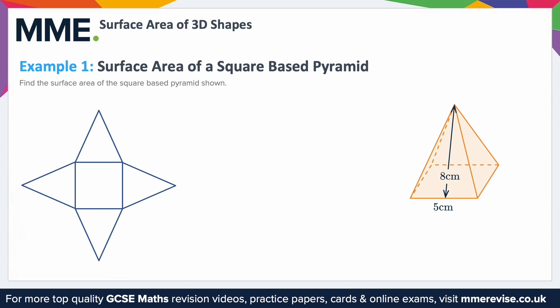You can see the net is split into five parts: a square in the middle and four triangles around the outside, and we know that the triangles are all completely identical. Focusing on the square in the middle, we know that it's 5 wide, so the area of that will be 5 squared, which is 25.